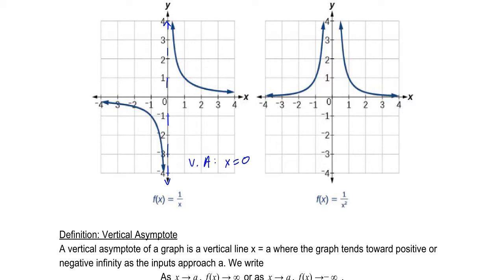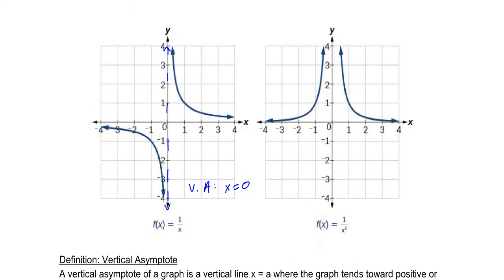We see something similar with the reciprocal squared function. As x values approach 0, the outputs are approaching infinity from both directions. So our vertical asymptote here is also x equals 0.